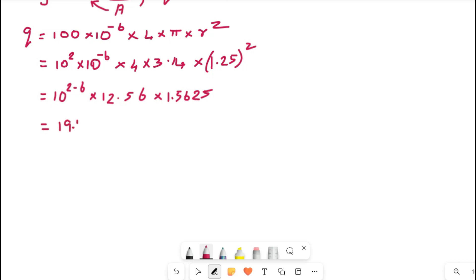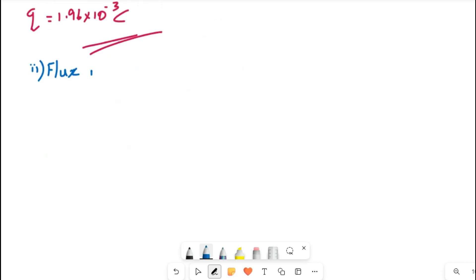Simplify now. Multiplication of 12.56 into 1.5625 will be equal to 19.6 into 10 raised to minus 4 coulomb, or you can write in standard form by keeping 1 digit then decimal, so 1.96 into 10 raised to minus 3 coulomb. Finish that part.